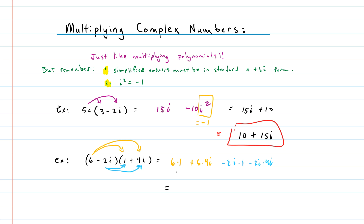Simplifying: we have 6, plus 24i and negative 2i which combine to give 22i, plus negative 8i squared. Since i squared equals negative one, negative 8 times negative 1 is positive 8. So 6 plus 8 gives us 14, and our answer is 14 plus 22i.